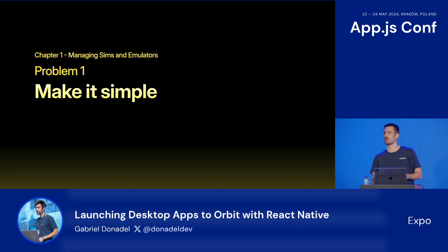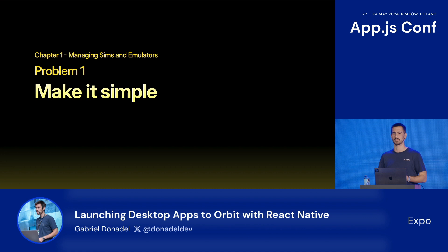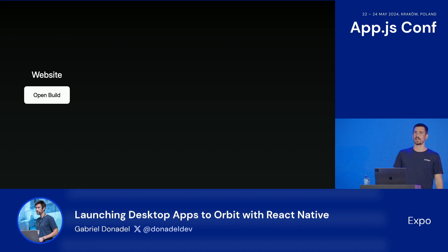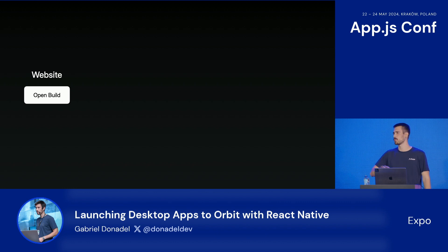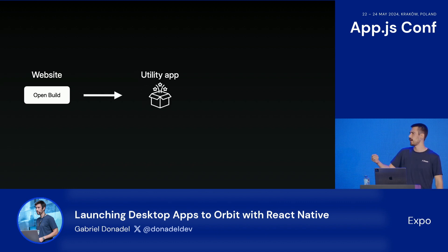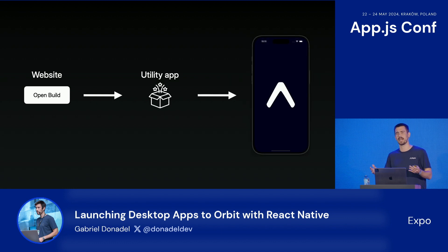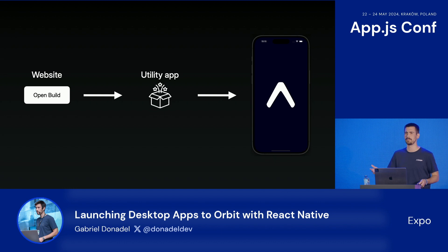With that in mind, we started this proof of concept of an app that could just make everything so much simpler. The flow that we envisioned was really straightforward: when accessing a build on our website, users would just see one button that, when pressed, would interact with this utility app on your computer that would do some magic and just get your app up and running in whatever device you wanted.